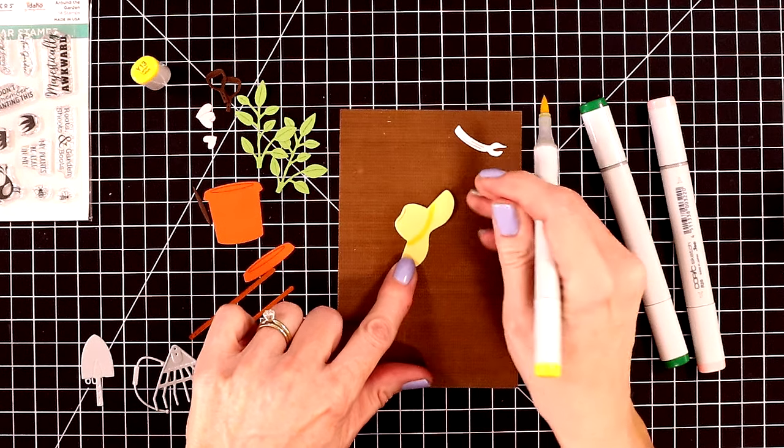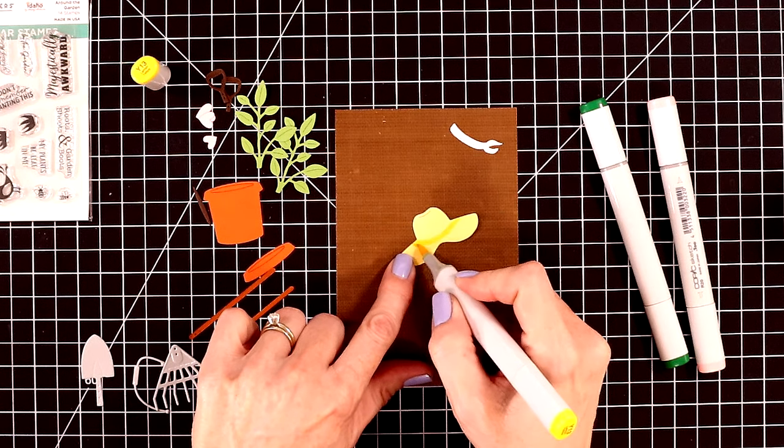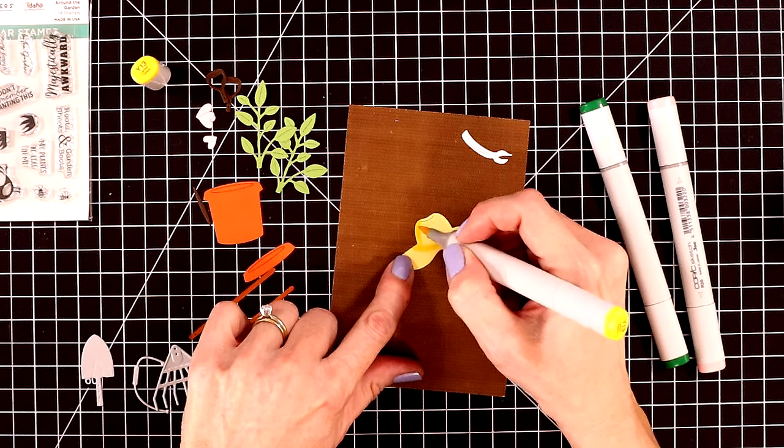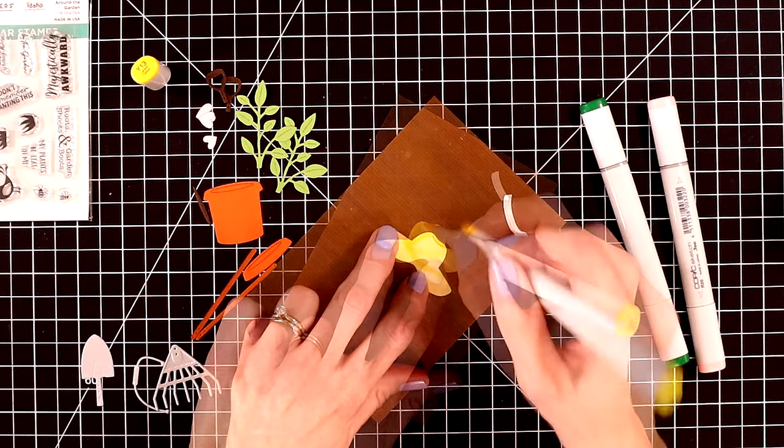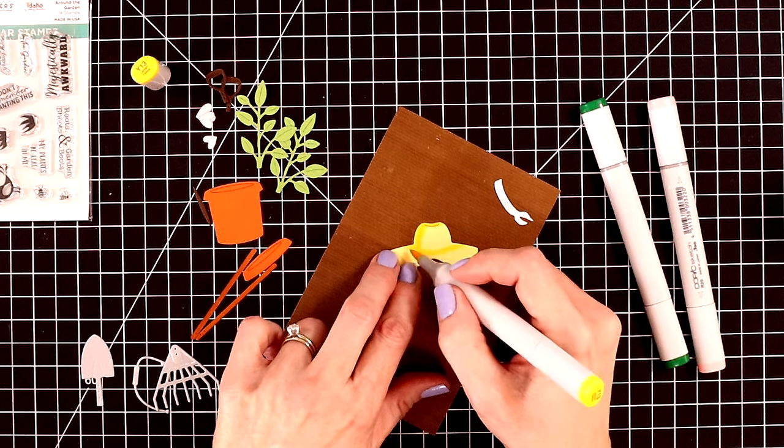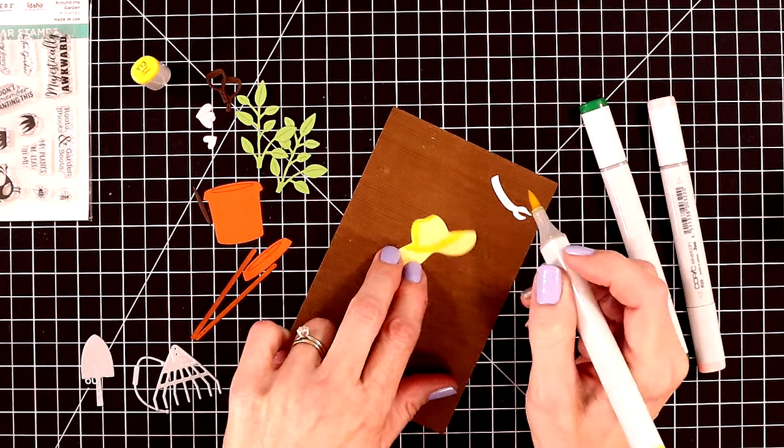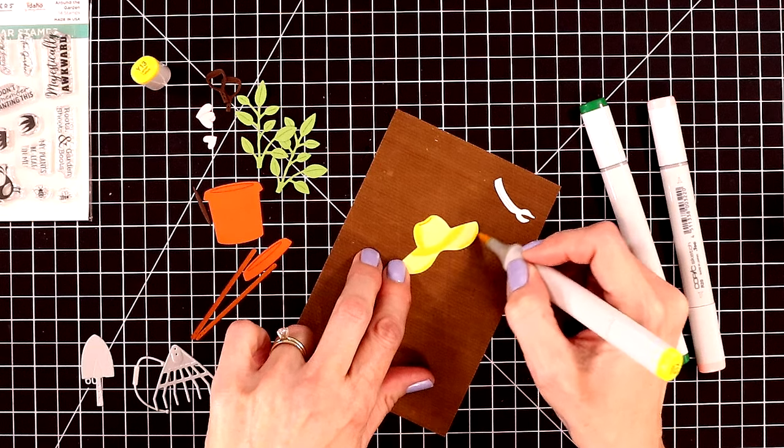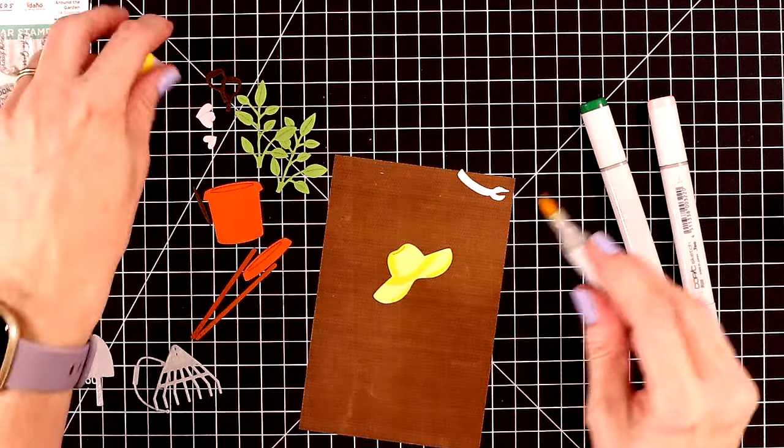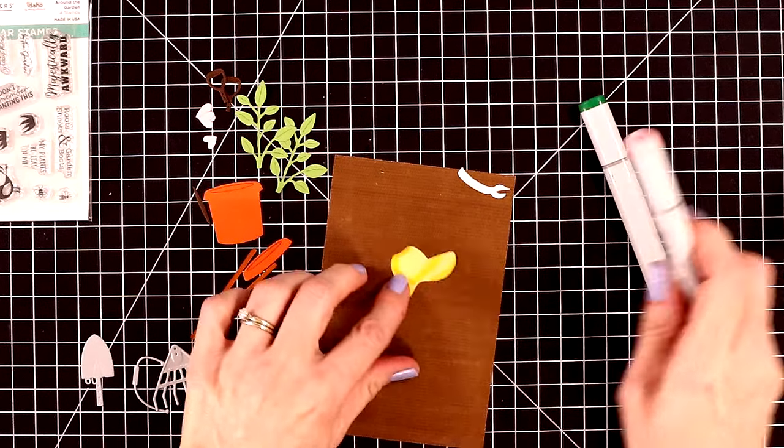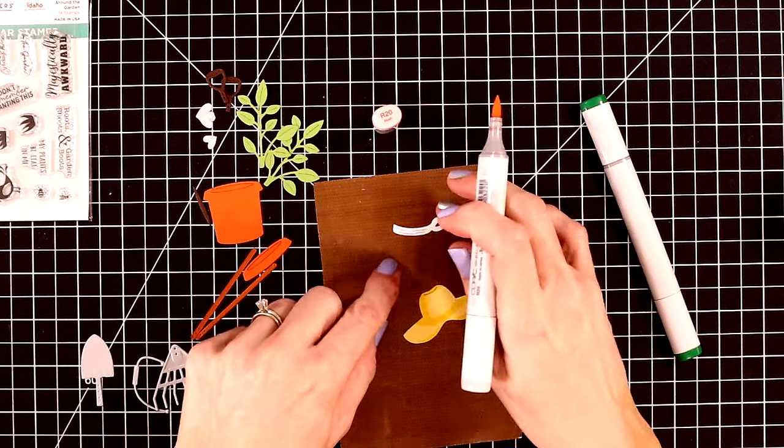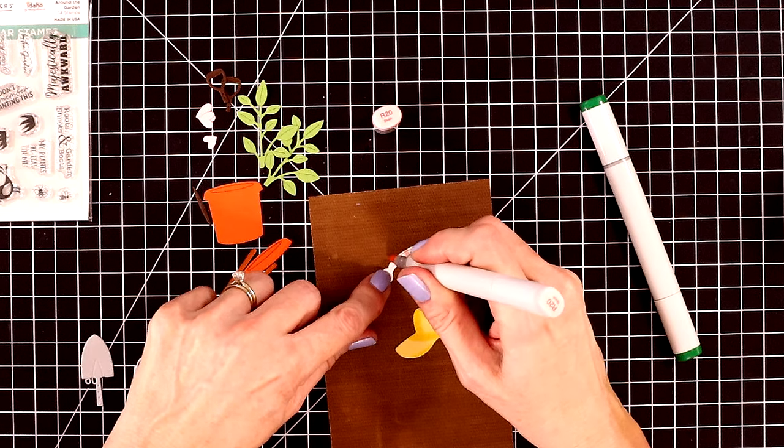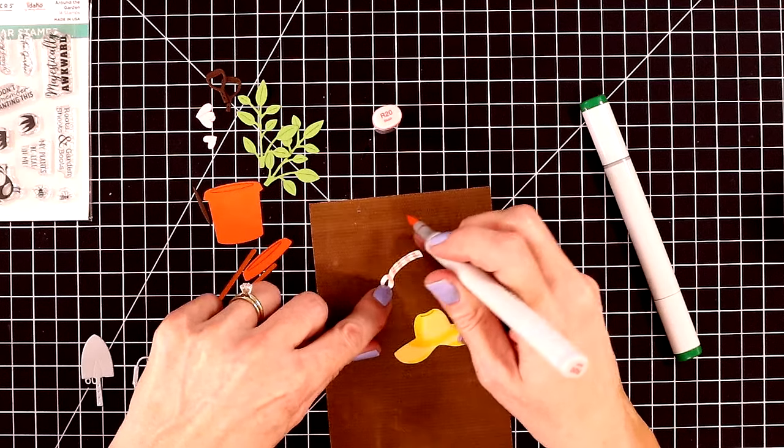And now to add some fun details to my die cuts. For the hat I pulled out a little bit of a darker yellow copic marker to add some shading just under the hat band and to the side and at the top of the hat. And then I'll add a little bit on the edges of the hat. And this is just very subtle. The die does emboss lines into it but they're hard to pick up on the camera but it's a cute detail to this. For the hat band I pulled out a pink copic marker and I'm just going to color on some stripes. It's very simple.